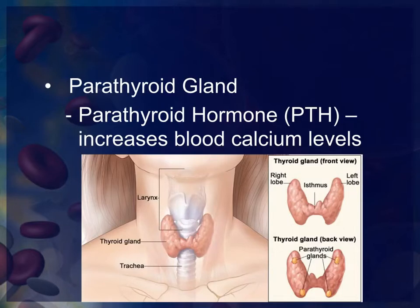On the backside, or posterior side, of the thyroid gland is the parathyroid gland. As the name implies, 'para' means surrounding, so the parathyroid gland is located just on the backside — those four little bumps on the backside of the thyroid gland are the parathyroid glands.